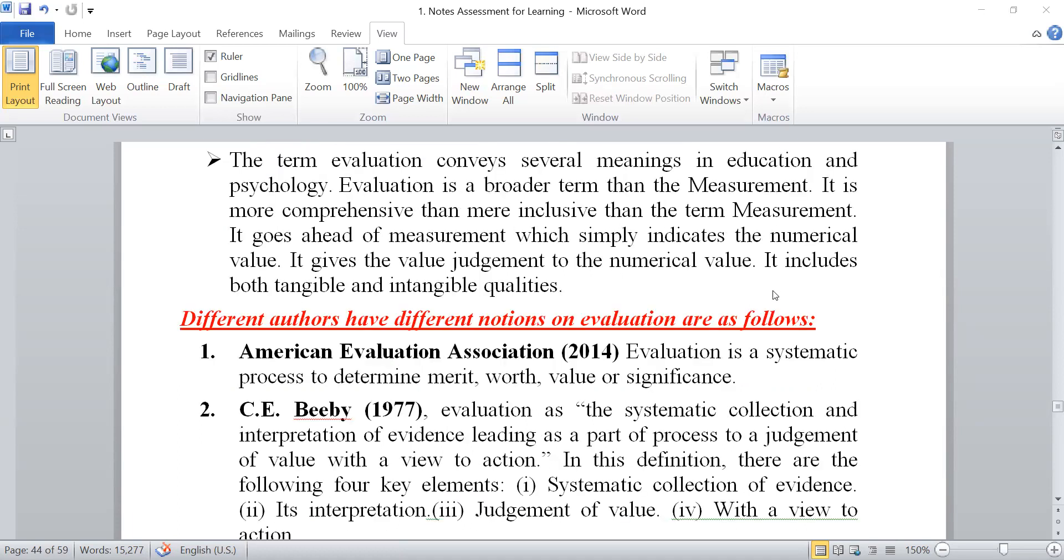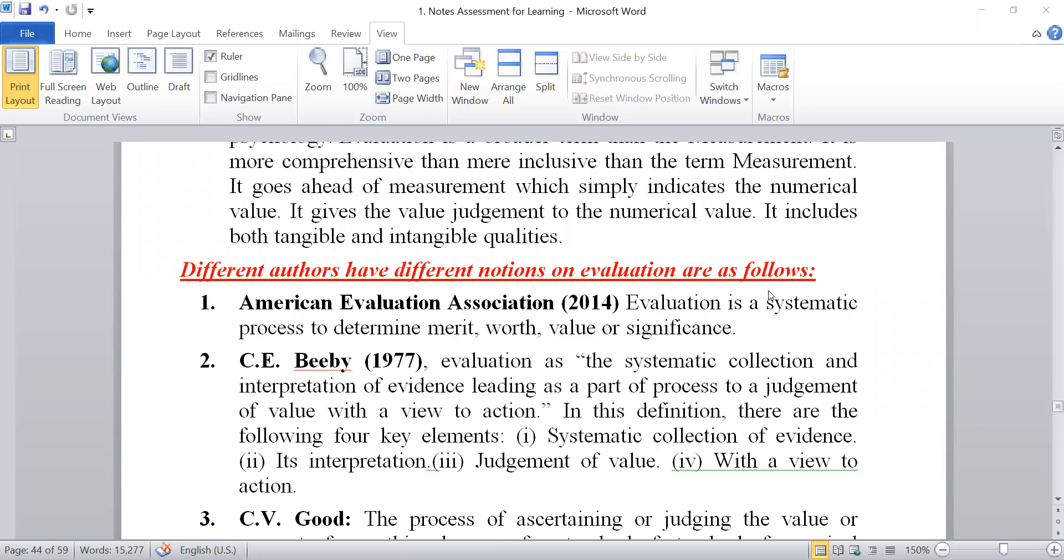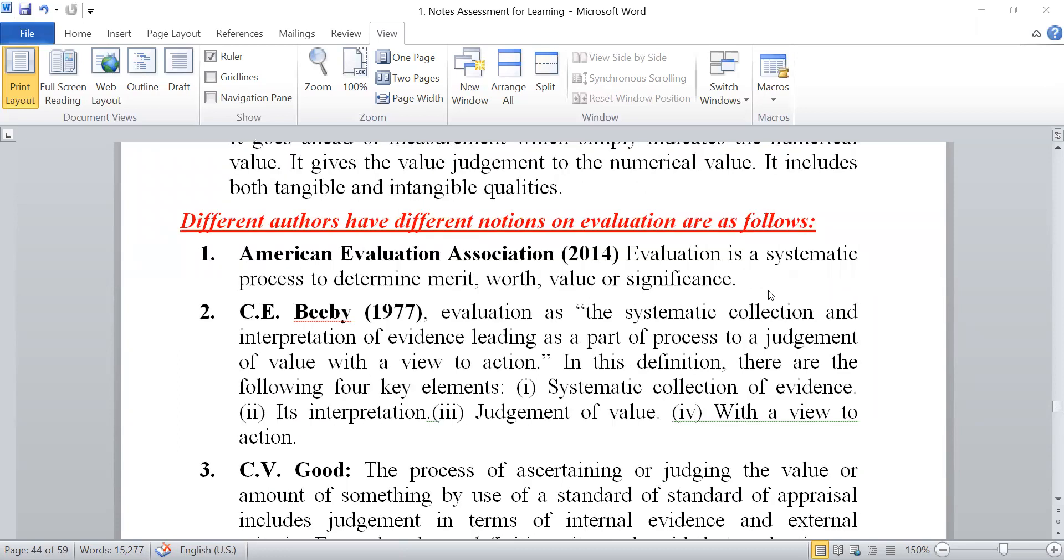Now different scholars have given different definitions of evaluation. We are giving some of the definitions with their names. The first definition is given by According to American Evaluation Association 2014, Evaluation is a systematic process to determine merit, worth, value, or significance. C.E. Beeby 1977 Evaluation adds the systematic collection and interpretation of evidence leading as a part of process to a judgment of value with a view to action. In this definition, there are the following four key elements, systematic collection of evidence, its interpretation, judgment of value with a view to action.